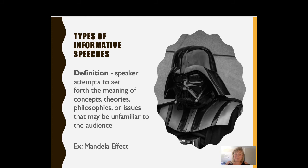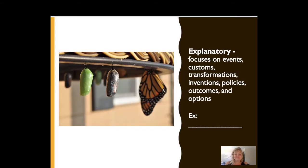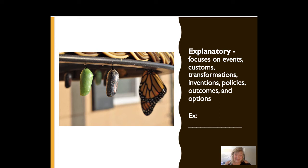A really great example of a definition speech is the Mandela effect — a wonderful topic for this speech. You can certainly do it, and if you don't know what it is, look it up. A third type of informative speech is the explanatory speech, where the speaker focuses on events, customs, transformations, inventions, policies, outcomes, or maybe even options. The goal is for the speaker to really explain in depth the ins and outs of any one of these things. It is very closely related to the descriptive speech, with only minor differences highlighted in our text.